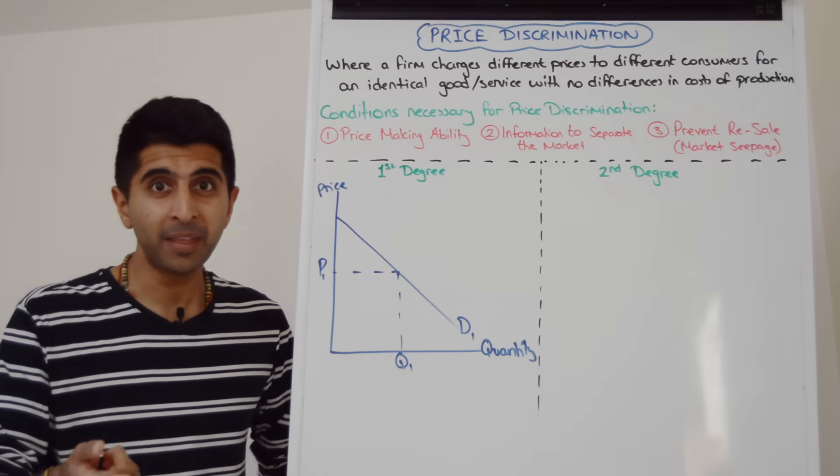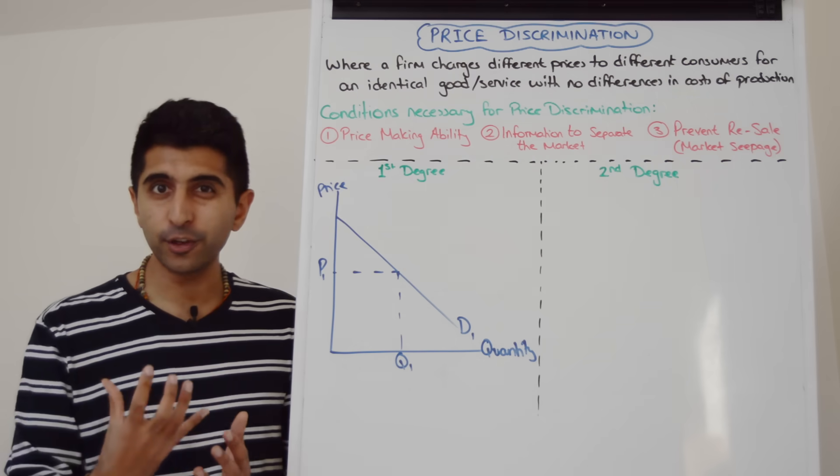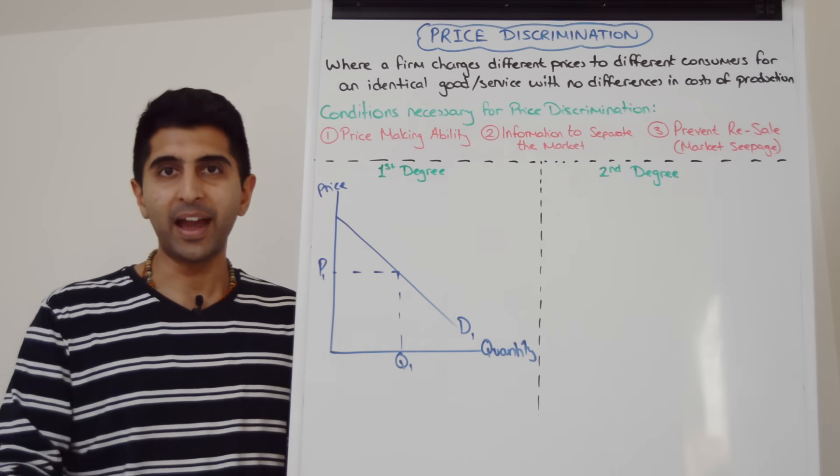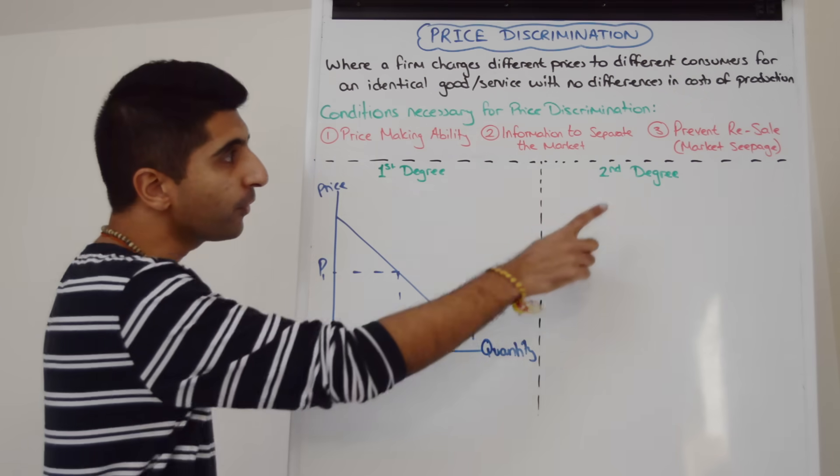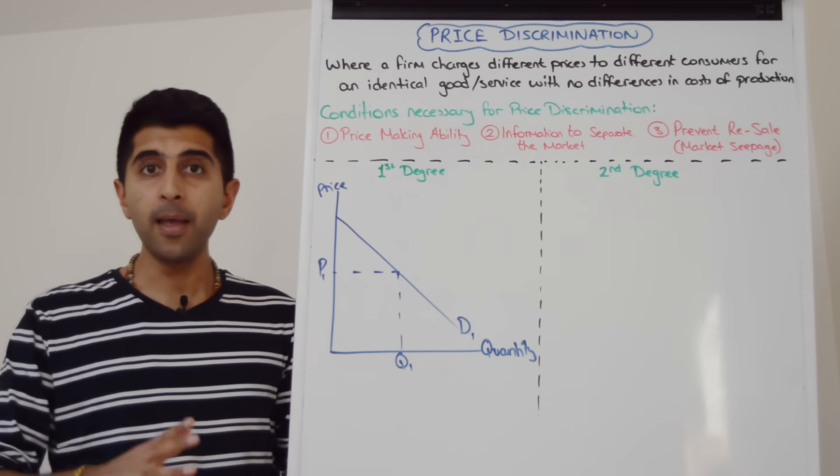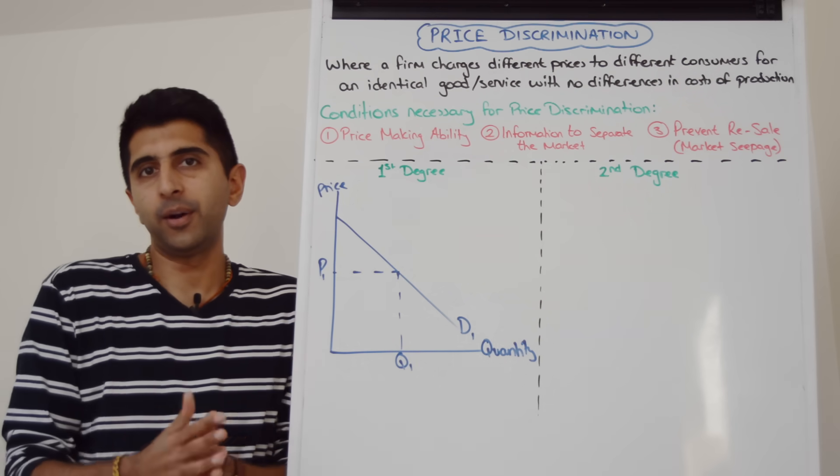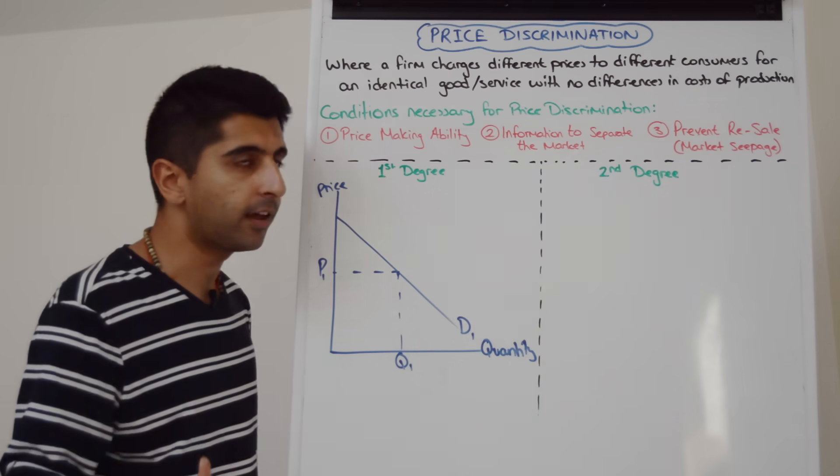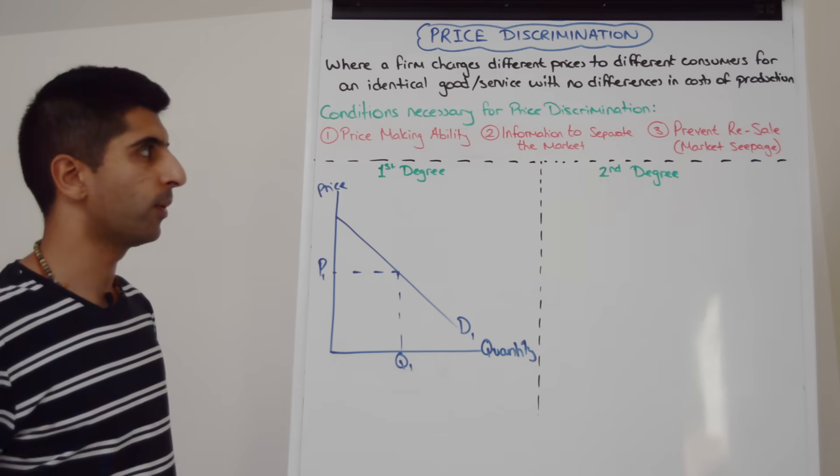But for that they need information, and have you guys noticed that whenever we do our shopping online these firms want us to create accounts. Well why? Because then they can track what we do, they can collect information and therefore segment us into different markets based on our PED. But also firms have got to be able to prevent resale of a good. They've got to stop somebody buying from where the price is lower and selling where the price is higher, otherwise there's nothing good for the firm, it's going to reduce profits for the firm. So they've got to be able to prevent resale like that. We call that market seepage, so preventing that is also important.